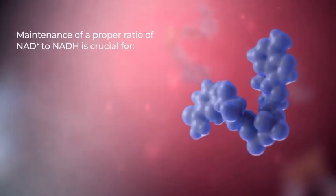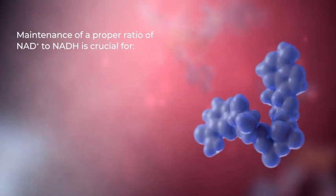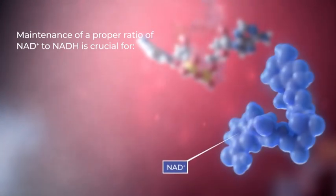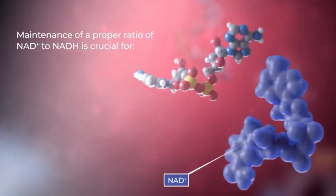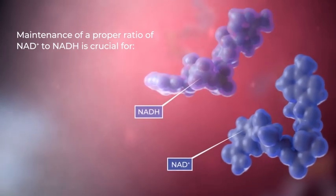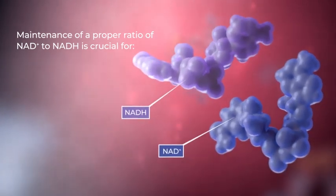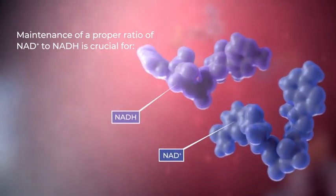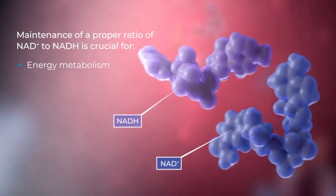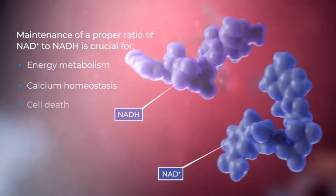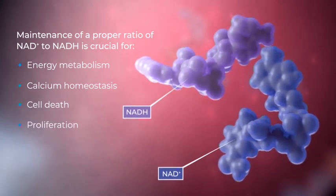Maintenance of a proper ratio of the oxidized form, NAD+, and its reduced form, NADH, is crucial for numerous fundamental cellular processes, including energy metabolism, calcium homeostasis, cell death, and proliferation.